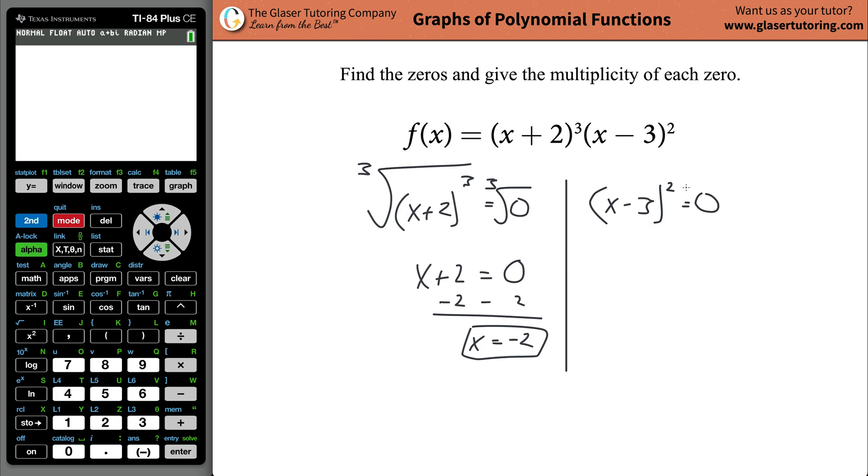So that's one of the zeros. You can approach this other side in the exact same way. In this case, you're going to take the square root of both sides to get rid of the square. So this is just x - 3 equal to zero, and then x is going to be equal to now three. So these two values are now the zeros, right, where x is negative two and x is going to be positive three.